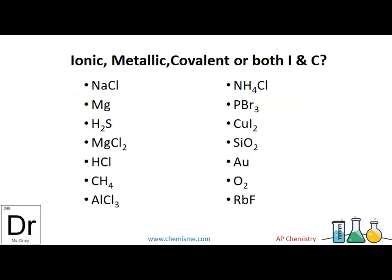So let's just make sure we can review ionic, covalent, metallic. If there's a metal and a non-metal, it's ionic. If it's just a metal, it's metallic. If there's only non-metals, it's covalent. So if you want to pause and see if you've got the acidities, we're just going to go through them really quick now.